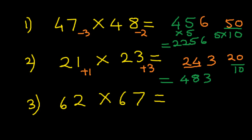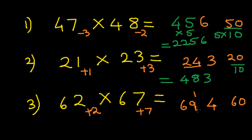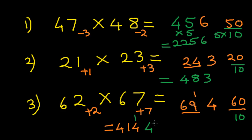Let's multiply 62 and 67. Both of these numbers are closer to 60, so we take 60 as our base. The differences are plus 2 and plus 7. We multiply 7 × 2 to get 14, so we write 4 and carry 1. Then 62 plus 7 gives 69. Since 60 is 6 times 10, we multiply 69 by 6 to get 414. Adding the carry 1 to 414 gives 415. So the answer is 4154.